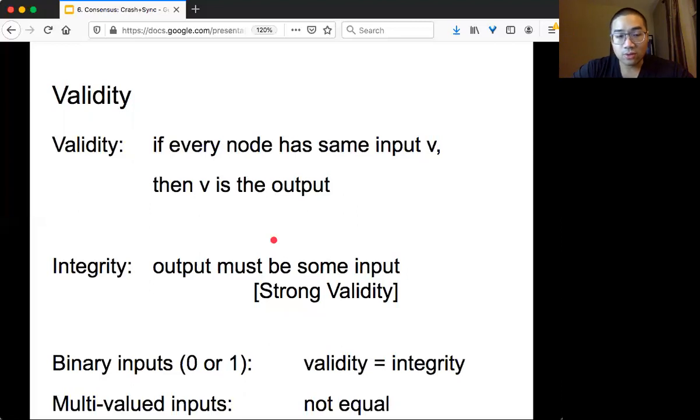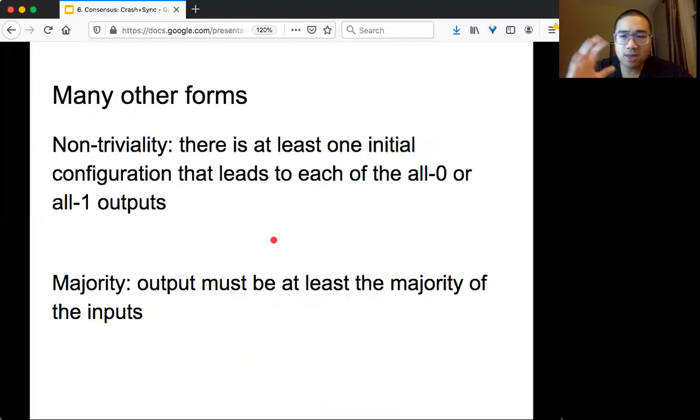Sometimes we also call integrity strong validity. There are many other forms, for example, non-triviality considers initial configuration, different distribution of input values. Some will lead to all zero or all one output. So it's obviously different from the integrity thing we defined before. We also have this notion of majority, so that output must be at least the majority of the input. Most consensus problems focus on either validity or integrity.